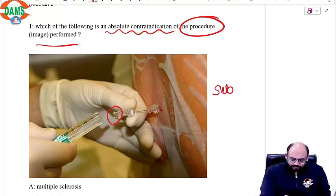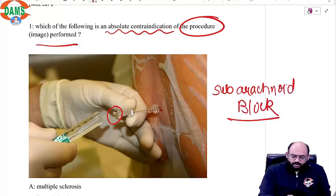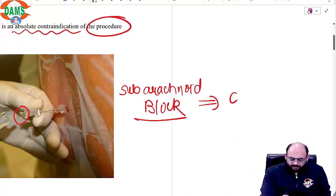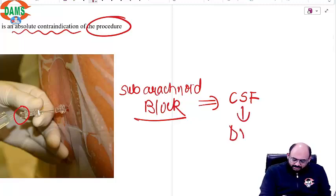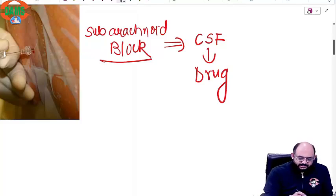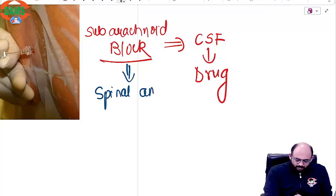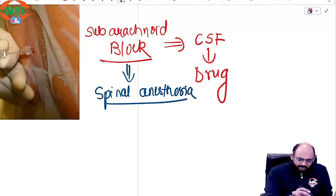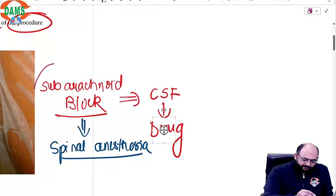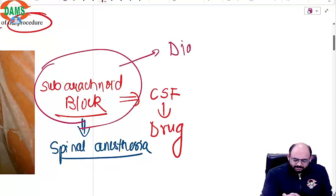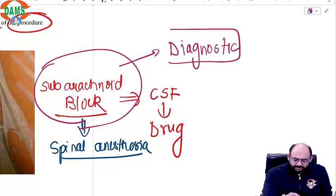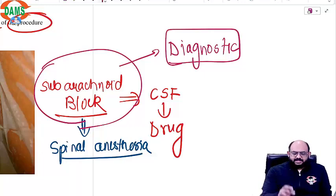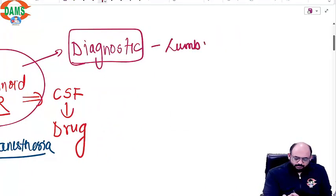This is a subarachnoid block, because your subarachnoid space contains CSF, and when you deposit the drug in CSF it is called a subarachnoid block. This is also called, in common language, spinal anaesthesia. When we do it under anaesthesia it is spinal, but if somebody is doing it for diagnostic purposes — only taking out the fluid, not injecting something — then it is called a lumbar puncture. The procedure remains the same.